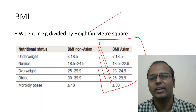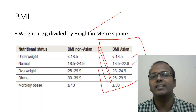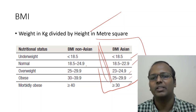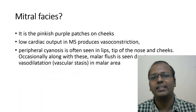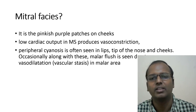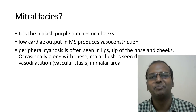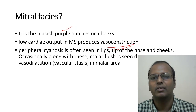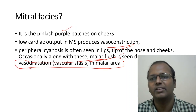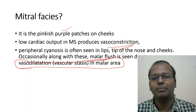For BMI, the Asian cutoff: less than 18.5 is underweight, 18.5–22.9 is normal (for Europeans up to 24.9), 23–27.4 is overweight, and more than 30 is morbidly obese. The formula is weight in kg divided by height in meters squared. Regarding abnormal facies: mitral facies is the most common presentation in CVS cases — it shows pinkish-purple patches on the cheeks due to low cardiac output and vasoconstriction, with peripheral cyanosis of the lips, tip of nose, and cheeks, plus malar flush due to vasodilation in the malar area.